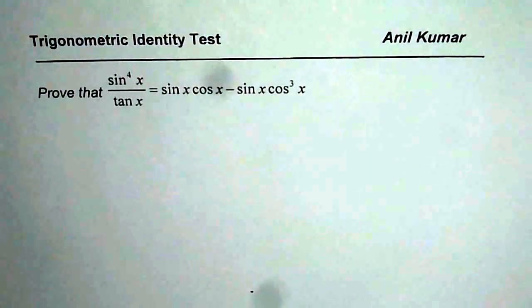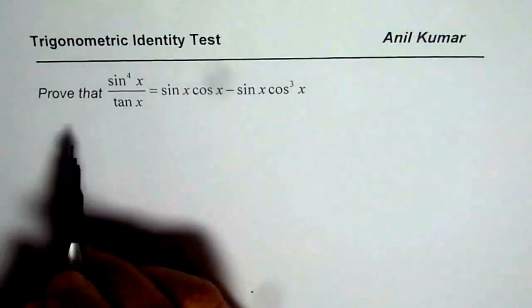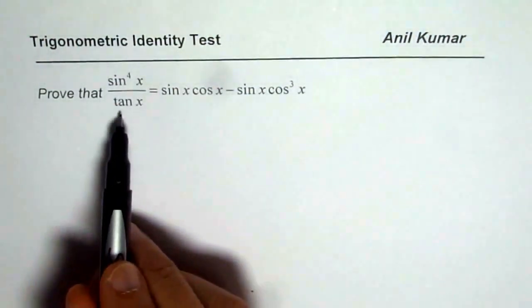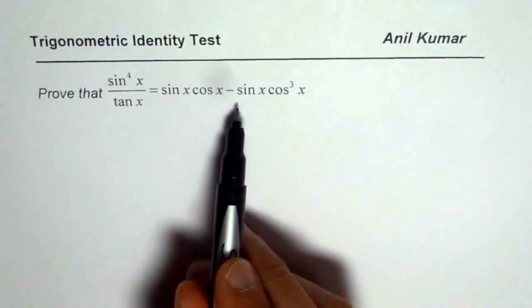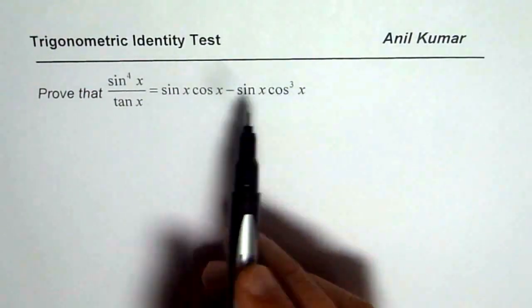I am Anil Kumar and here is your test problem on trigonometric identity. You need to prove that sin to the power of 4x divided by tan x is equal to sin x cos x minus sin x cos cube x.